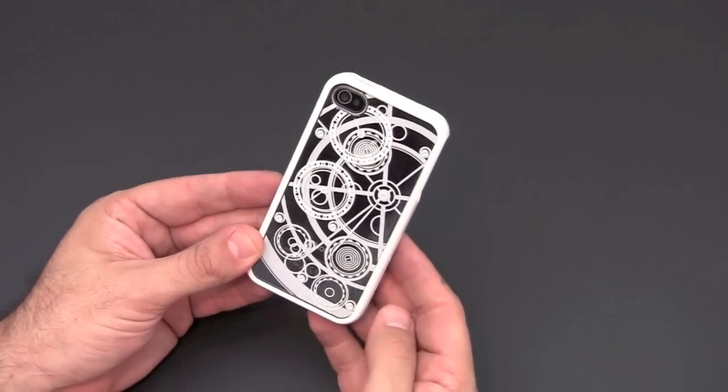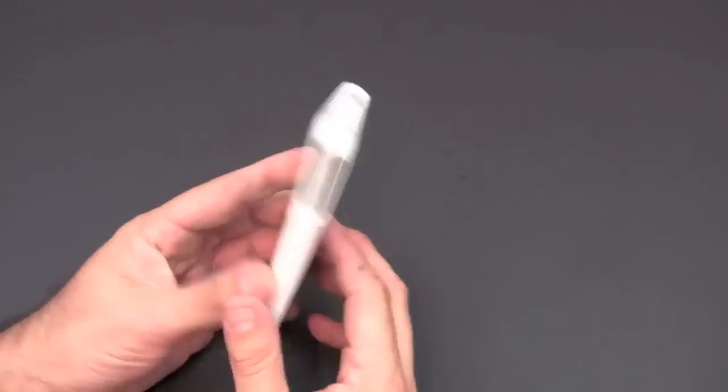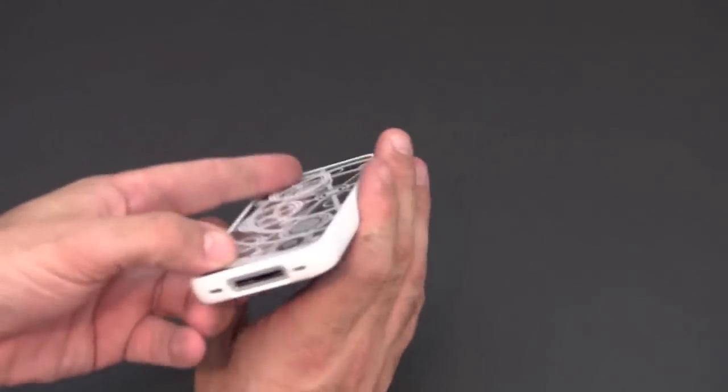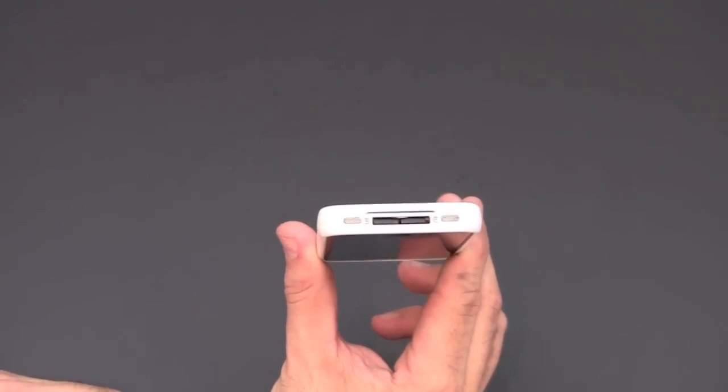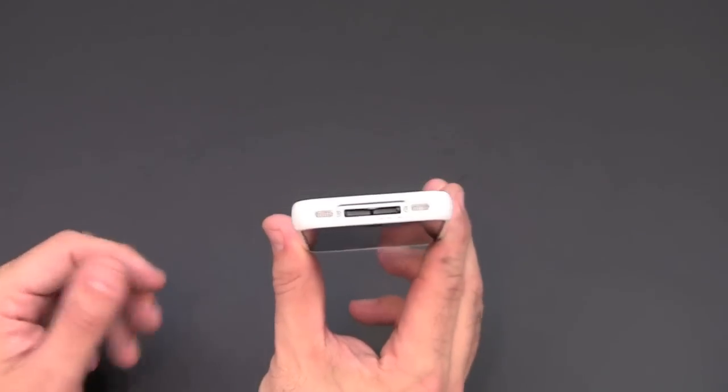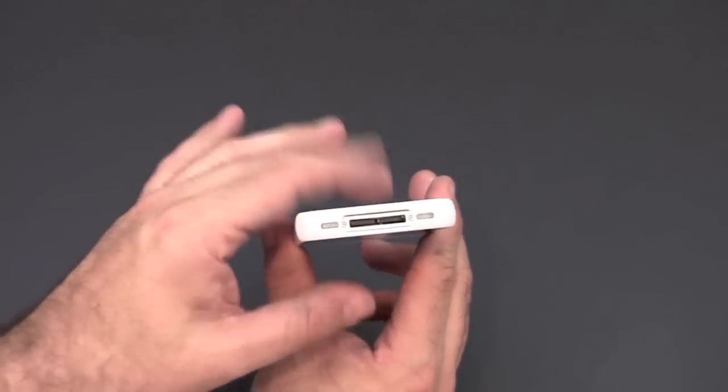Let's take a look at all the ports and controls. On the bottom there are individual cutouts for the 30-pin connector, the speaker, and the main mic. You can dock this with most docks. It's pretty wide open and it's not too thick at the bottom.